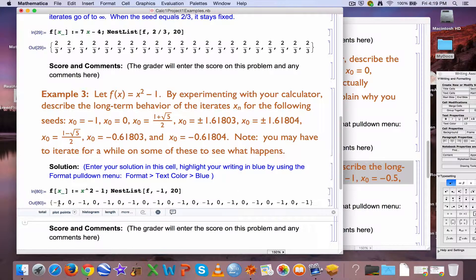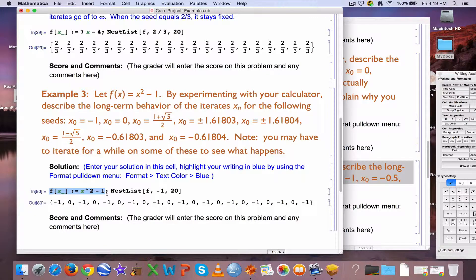What happens here? Wow, that's something different. The numbers are bouncing back and forth between negative 1 and 0. You should check this in your head by plugging negative 1 into this function. You're going to get 0, then you plug 0, and you get back to negative 1.